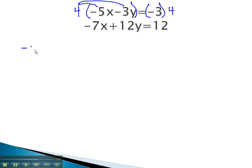As we distribute, that'll give us negative 20x minus 12y equals negative 12. The other equation, unchanged, is negative 7x plus 12y equals positive 12.